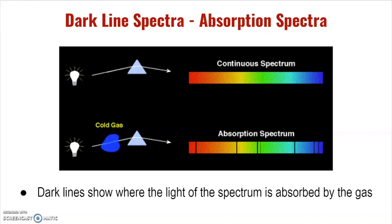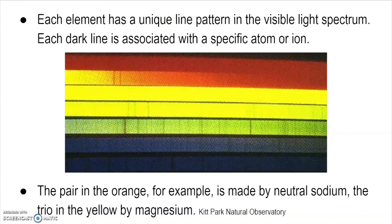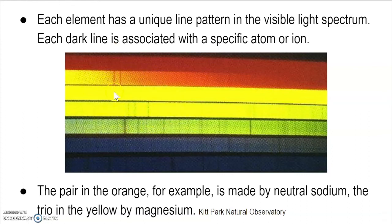The dark lines show us where the light of the spectrum is absorbed by the gas. Just like each element has a unique bright line or emission spectrum, each element also has a unique dark line spectrum. In this image, each dark line is associated with a specific atom or ion — the pair in the orange is made by neutral sodium, while the three lines in the yellow are made by magnesium.